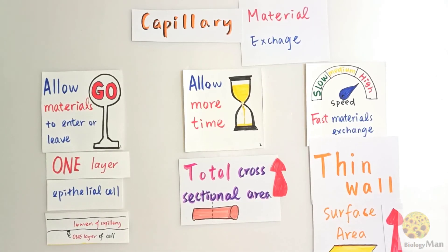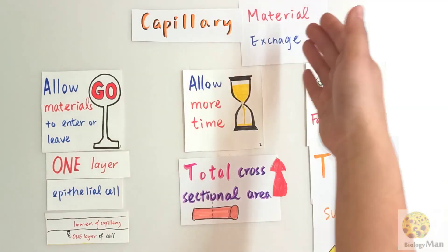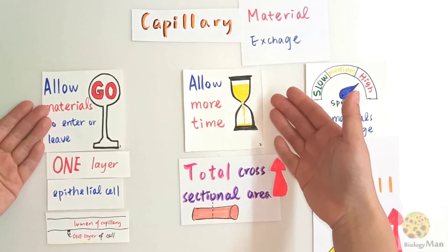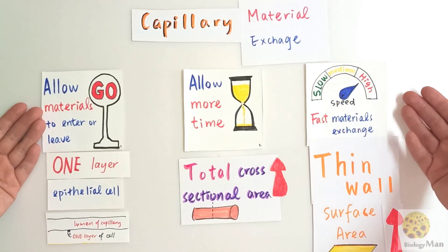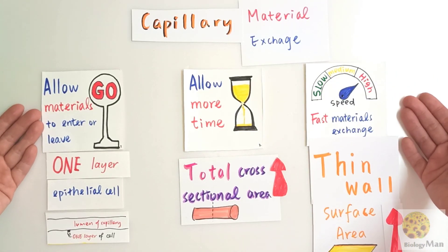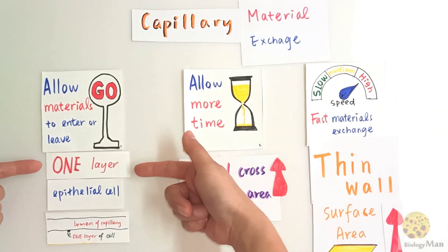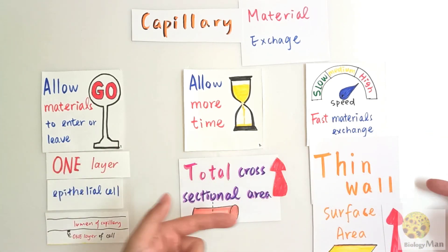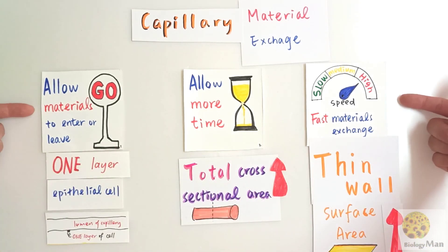Now let's summarize what we have learned. Capillary is a site for material exchange. By fulfilling these criteria and having these features, they can do their job well. Give me a like if you like this video and subscribe to my channel. See you next time. Bye!